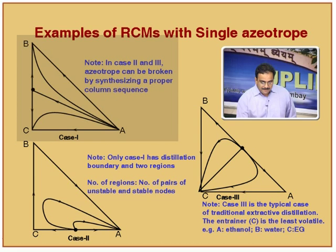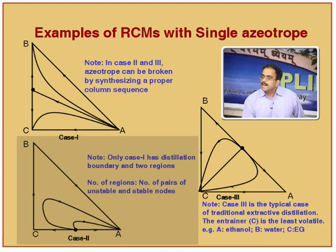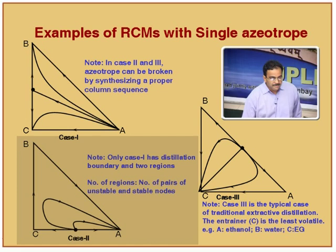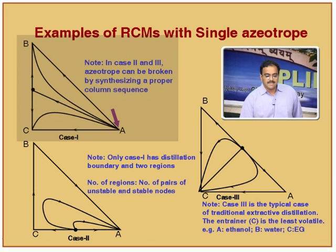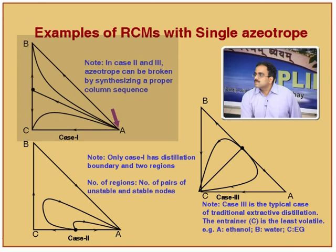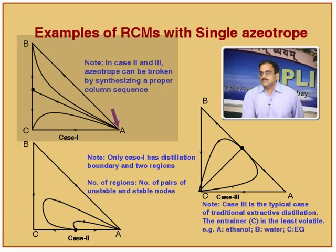What does it mean? If I say A and B — say ethanol-water azeotrope — I add some component, identify some component B which gives you this RCM, then I say that it is possible to separate it. But if I identify, suppose in this case, B and C are ethanol-water because it is a minimum boiling azeotrope, and I identify a component A which gives you the RCM for the ternary system like this, then I say that it is not possible to design a column sequence. That is how RCM would help you to synthesize a column sequence.